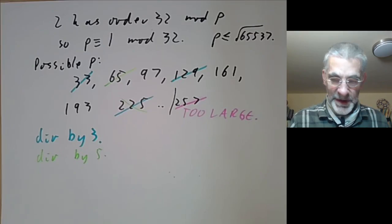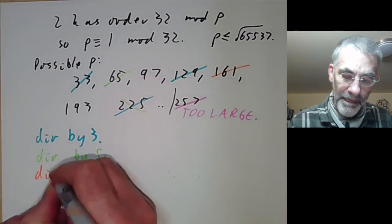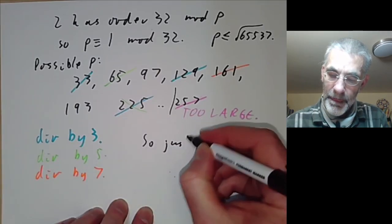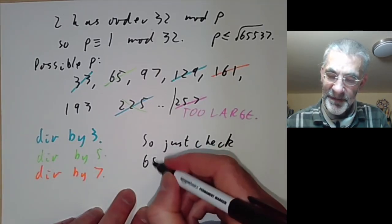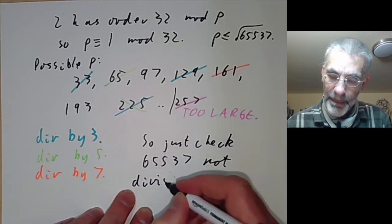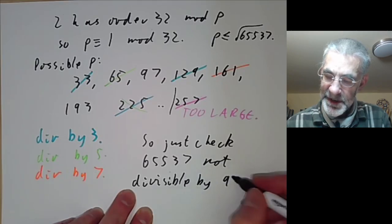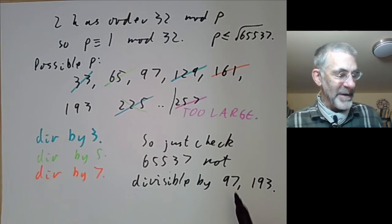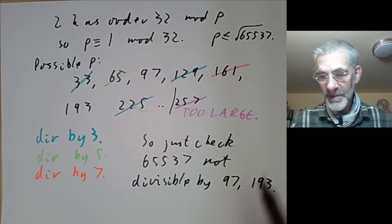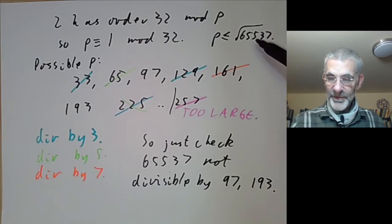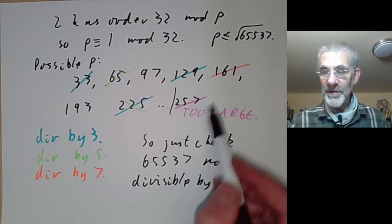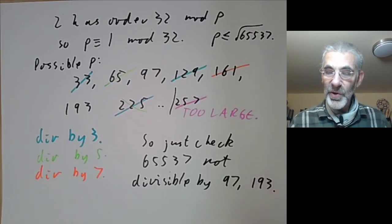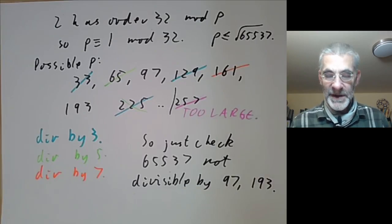This leaves exactly two numbers to check: 97 and 193. We just need to verify that 65537 is not divisible by 97 or 193, which requires a couple of pieces of long division. This has reduced the problem from checking about 40 or 50 primes below 257 to just two — probably how Fermat proved that 65537 is prime.